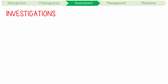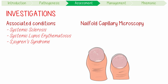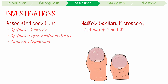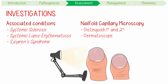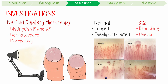In addition to evaluating the patient for conditions associated with secondary RP, you can perform nail fold capillary microscopy. This is a common method to help distinguish between primary and secondary RP. You use a dermatoscope on the proximal nail fold to inspect capillary morphology. Normal morphology is looped and evenly distributed. In systemic sclerosis, however, vessels are branching and unevenly distributed.